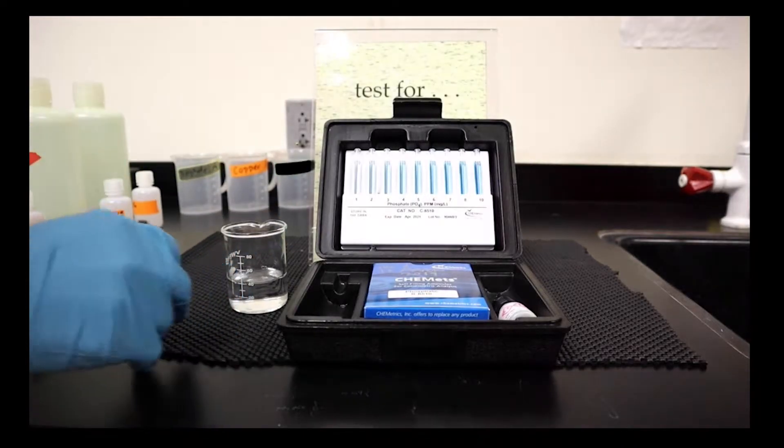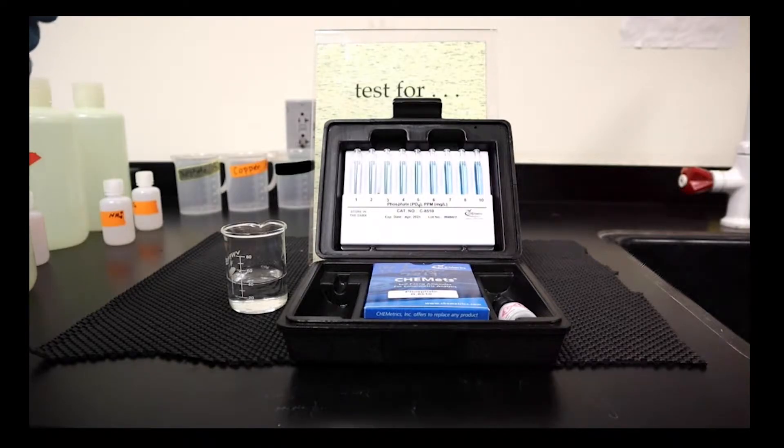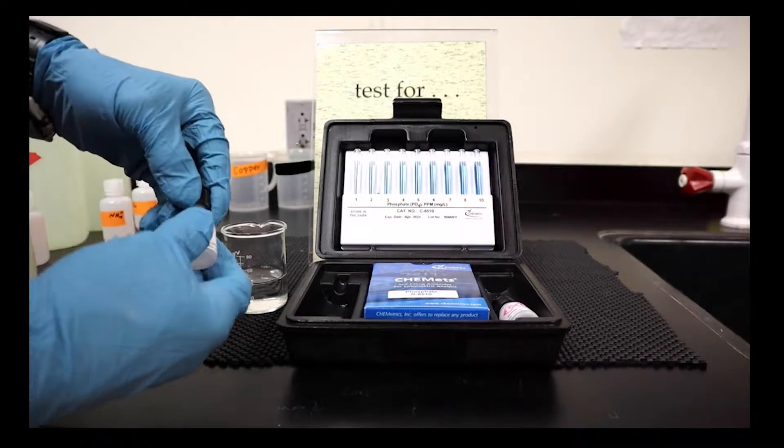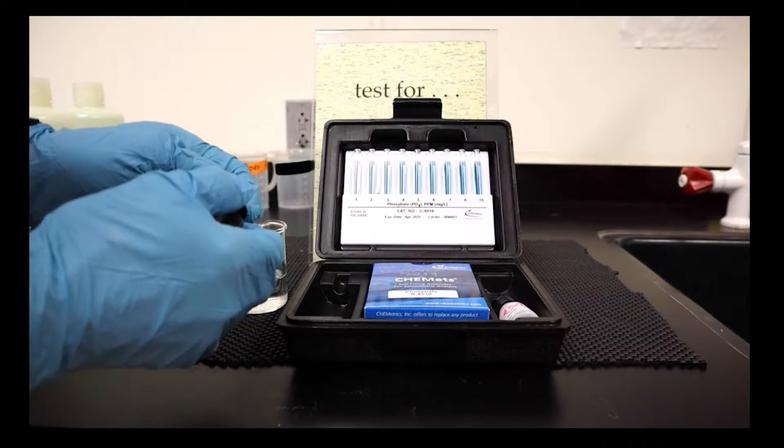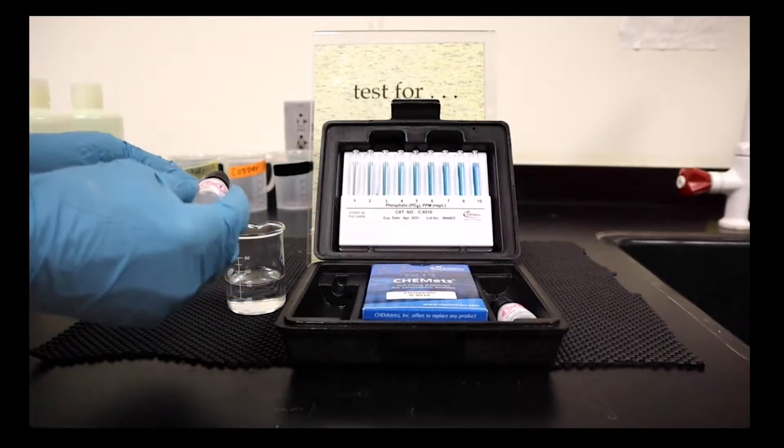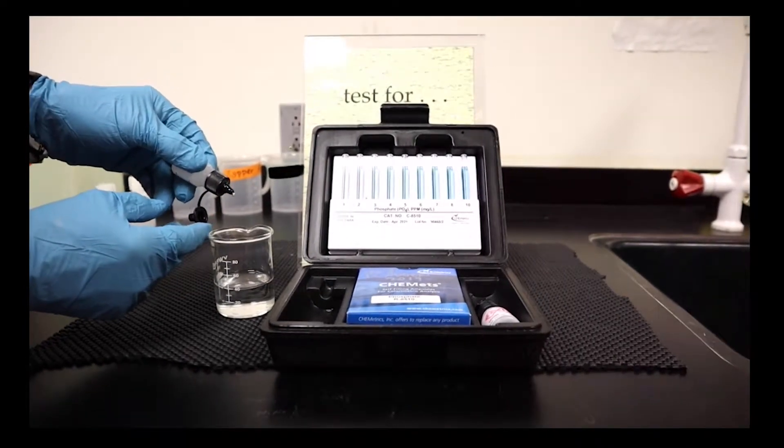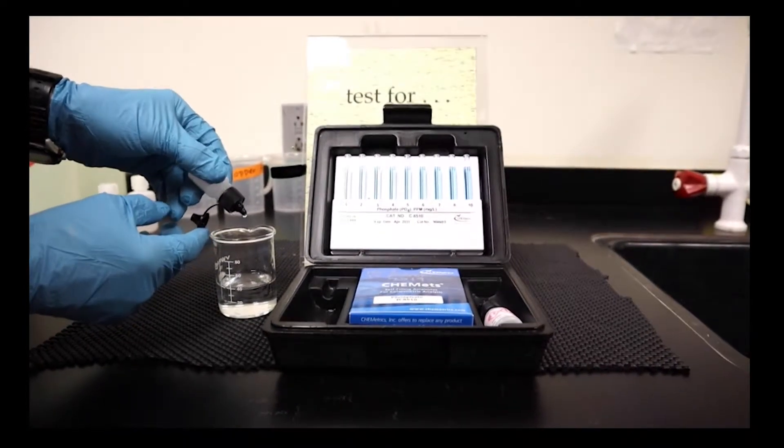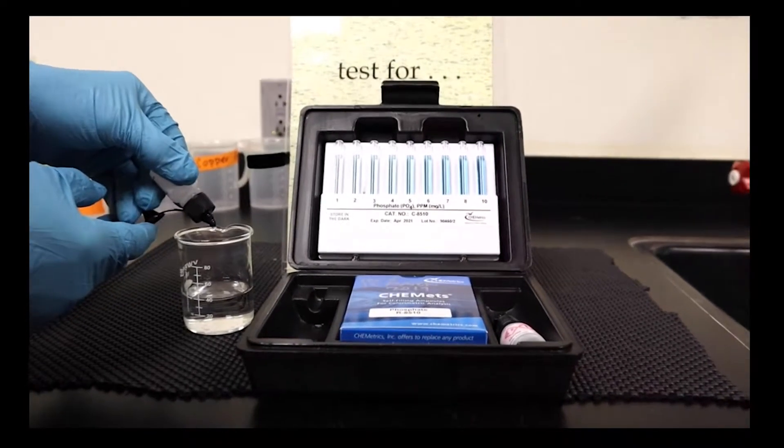Now we want to add two drops for every 25 cc's, we want to add two drops of this reagent. We've got about 40 cc's in this case, so we'll put three drops of reagent in there: one, two, three.